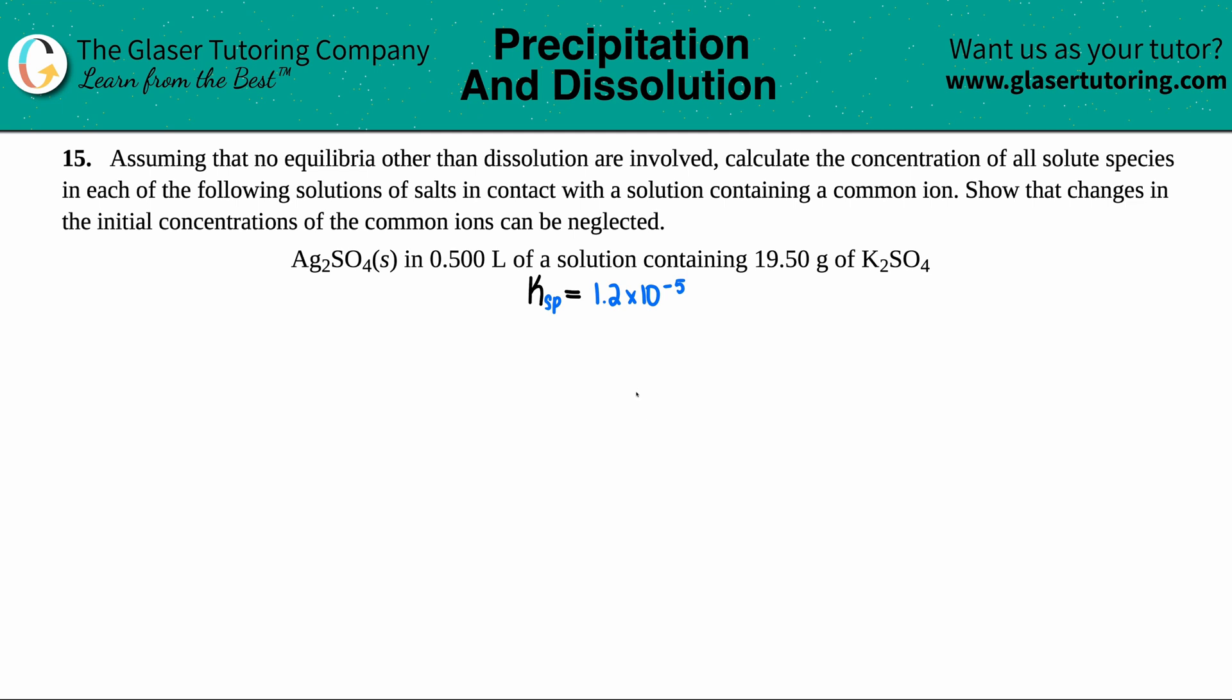Number 15. Assuming that no equilibria other than dissolution are involved, calculate the concentration of all solute species in each of the following solutions of salts in contact with a solution containing a common ion, and then show that the changes in the initial concentrations of the common ions can be neglected.